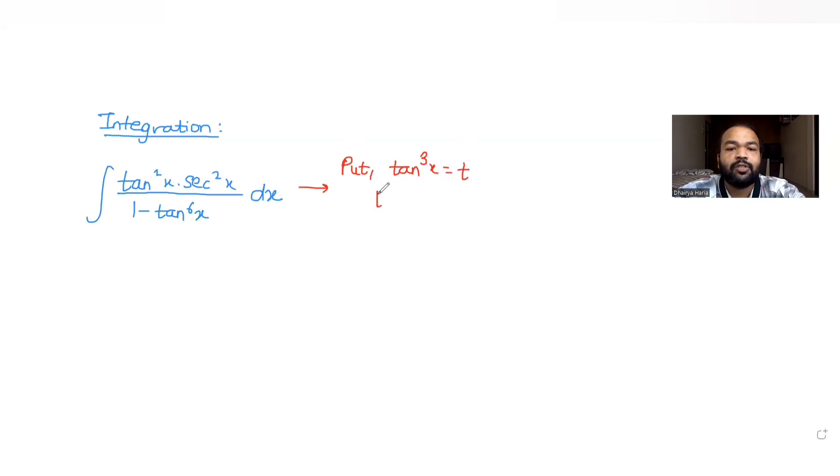Now if I see tan⁶x, it will become t². When I put tan³x equals t and take the derivative, I get 3tan²x times the derivative of tan x, which is sec²x dx, equals dt.